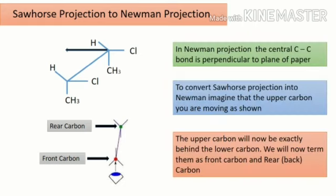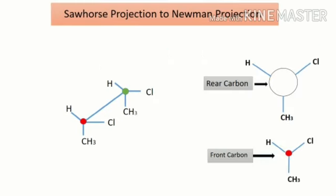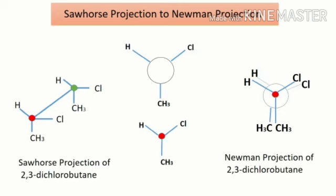We will now term them as front carbon and rear (back) carbon. The front carbon is shown as a dot with three lines. The groups attached to the front carbon are H, Cl, and CH₃. The rear carbon is shown by a circle with lines, and the groups attached to the rear carbon are also H, Cl, and CH₃. So, by overlapping the dot and circle, we get the complete Newman projection of 2,3-dichlorobutane.